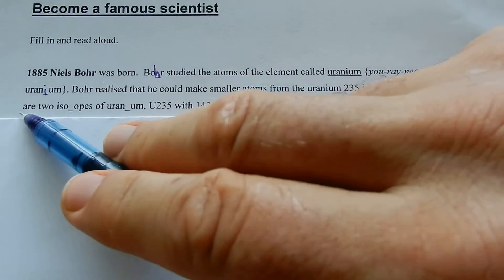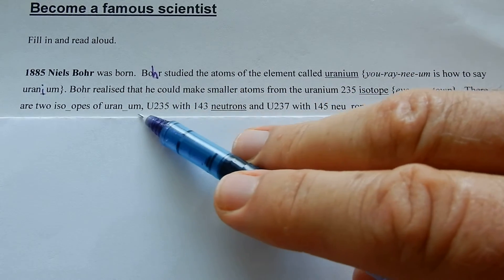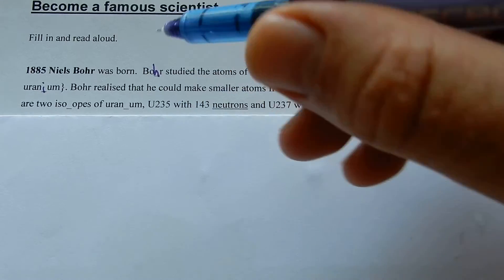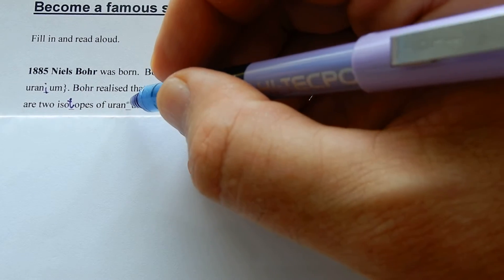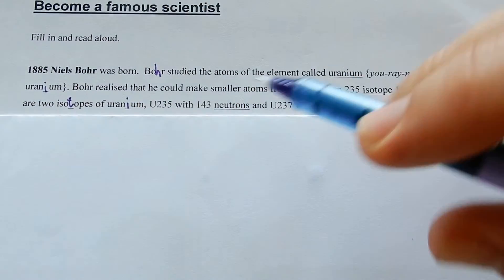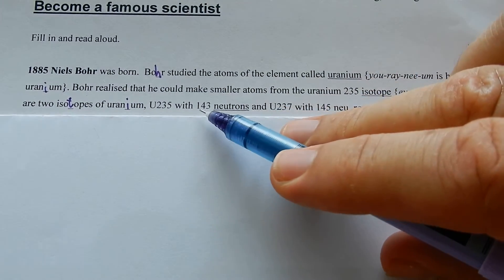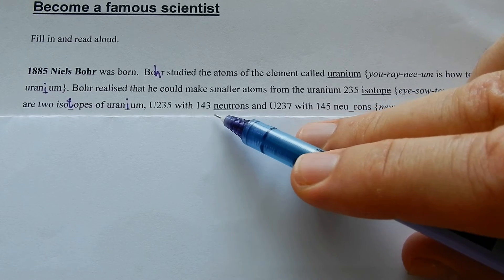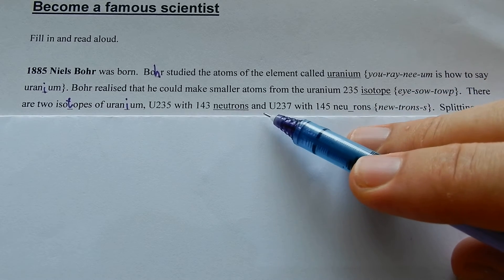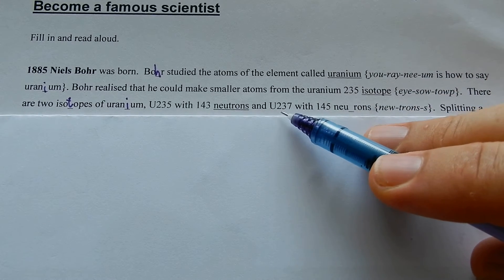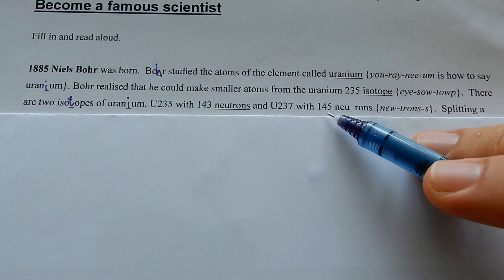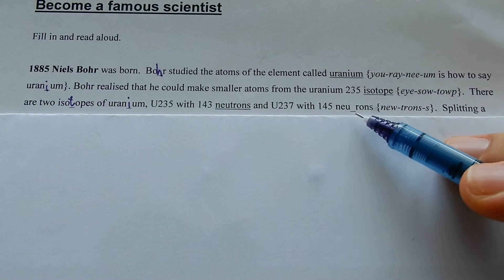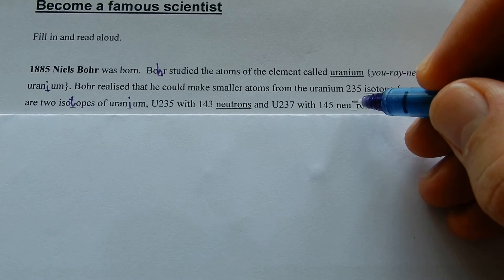There are two common isotopes of uranium: uranium-235 with 143 neutrons, and U-237 with 145 neutrons.